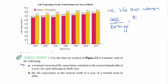So we have 81.1 minus 71.1 over the birth year range. We started with the information for 2010, so we're going to use 2010 minus 1950. This gives us 10 over 60, which reduces down to one-sixth.